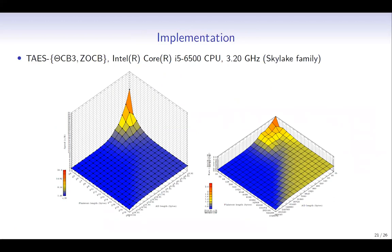This is one of our implementation results, showing the result of ThetaCB3 and ZO-CB, where T-AES is used as the underlying TBC, and we used the Skylake family of CPUs in our implementation. This graph shows the absolute speed of ZO-CB in cycles per byte; one axis shows the length of AD, and the other shows the length of plaintext. From the graph, we can see that in the fastest case, ZO-CB reaches a speed of about 1.46 cycles per byte.